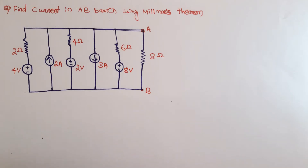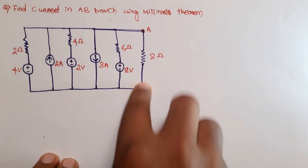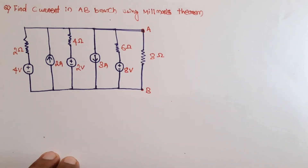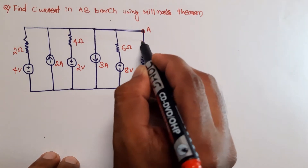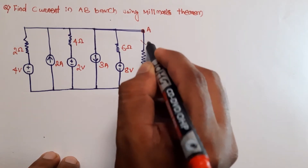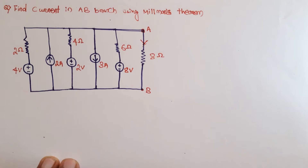Hello friend, welcome to my YouTube channel Electrical Bush. Today we are going to solve another problem related to Millman's theorem. The question is to find the current in the AB branch, that is the 8-ohm branch, using Millman's theorem.